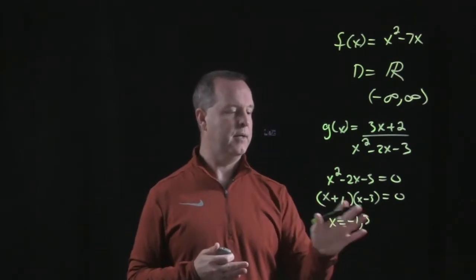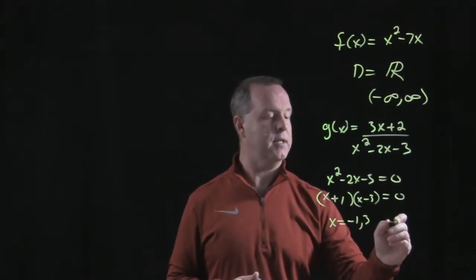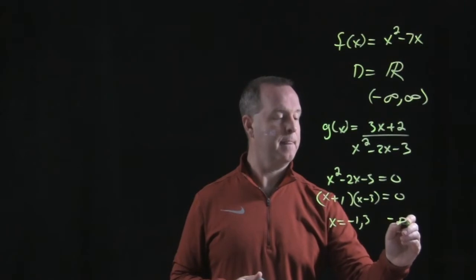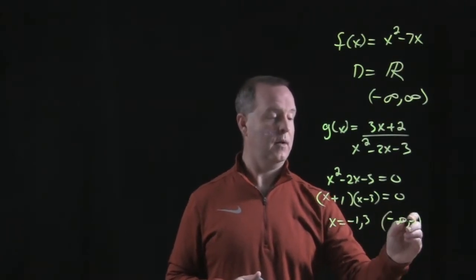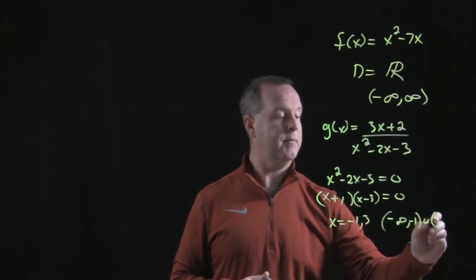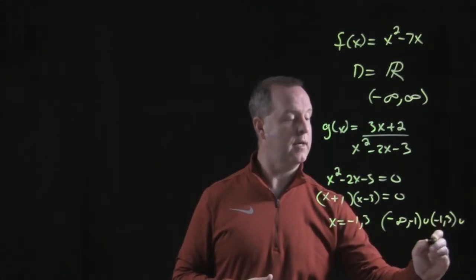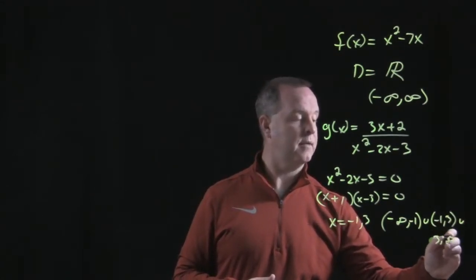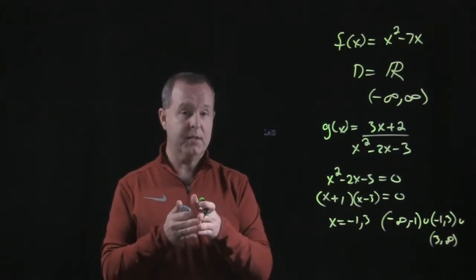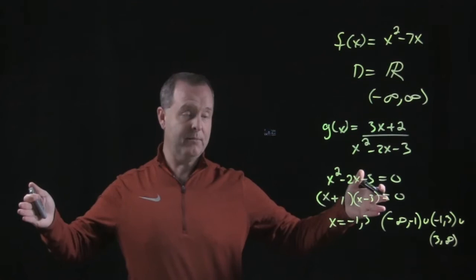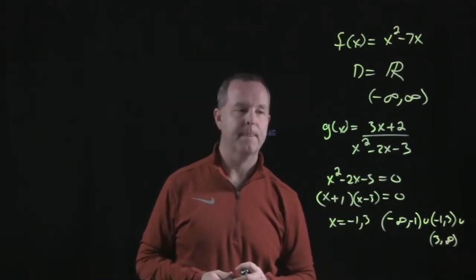And I could write that. So my domain, if I were asked to write my domain, I could write my domain as the union of negative infinity to -1. I have to exclude -1. I have the numbers between -1 and 3. I have to exclude 3 with a union of 3 to positive infinity. So I have those three areas, which constitutes the entire number line, my set of all real numbers except for the values of -1 and 3.